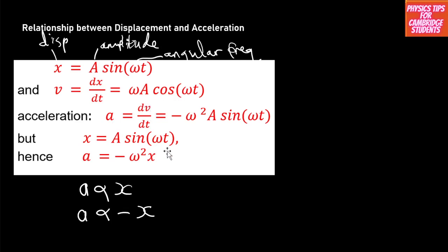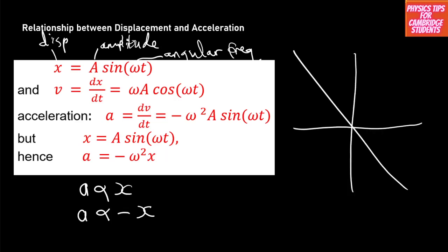If you draw a graph of acceleration a versus displacement x, you get a straight line graph that passes through the origin with a negative gradient.